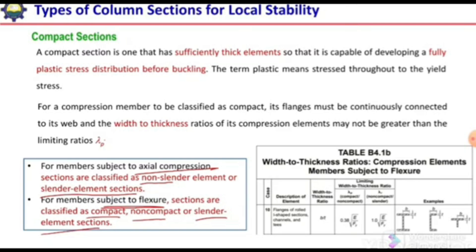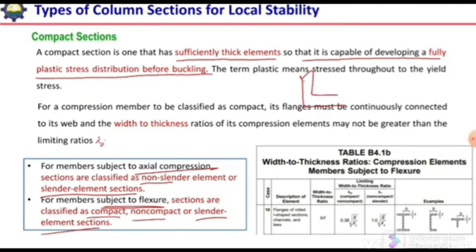A compact section is one that has sufficiently thick elements so that it is capable of developing a fully plastic stress distribution before buckling. For example, with an angle section, the thickness of the legs or elements will be sufficiently large that they will not buckle locally before the plastic stress distribution is fully developed — meaning the whole section will yield before local buckling occurs.